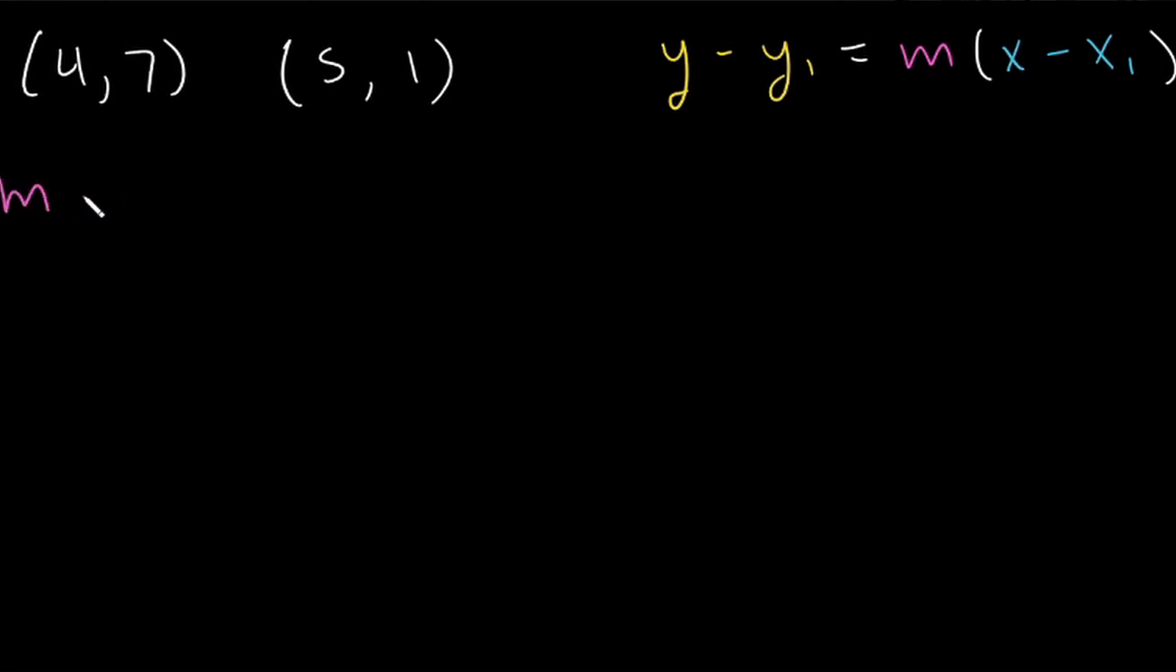We have m is equal to change in y over change in x. So what is our change in y? It's going to be the difference of our two y values. So 1 minus 7. And then we divide by the difference between our two x values, 5 minus 4. So 1 minus 7 is negative 6. 5 minus 4 is 1. So our slope is going to be negative 6.